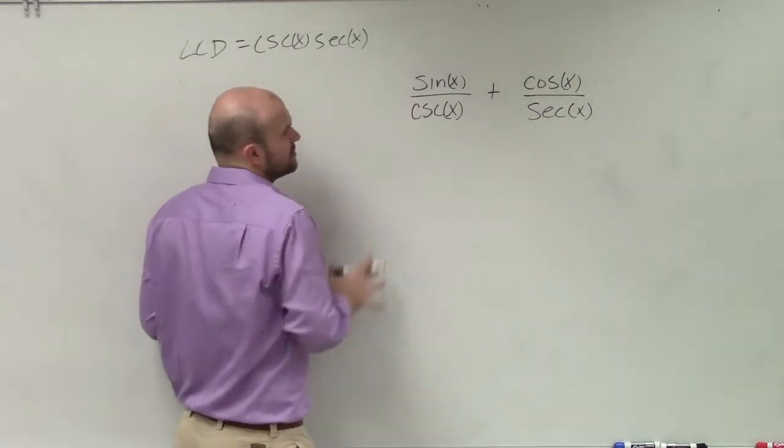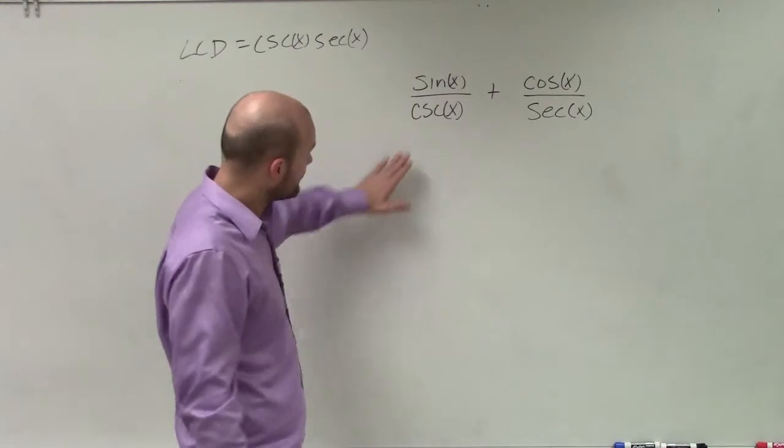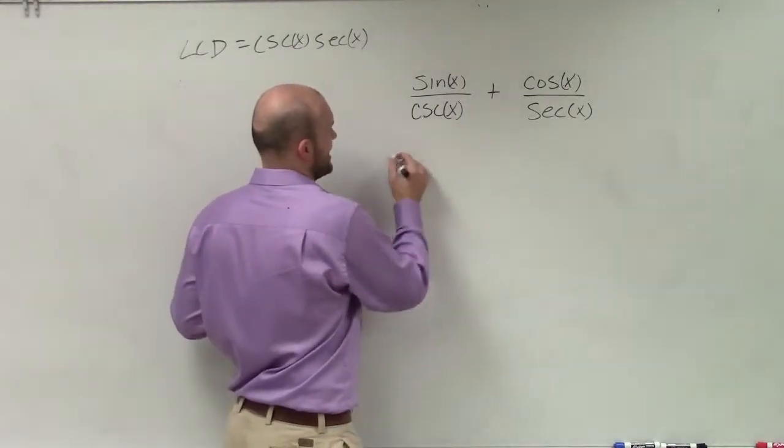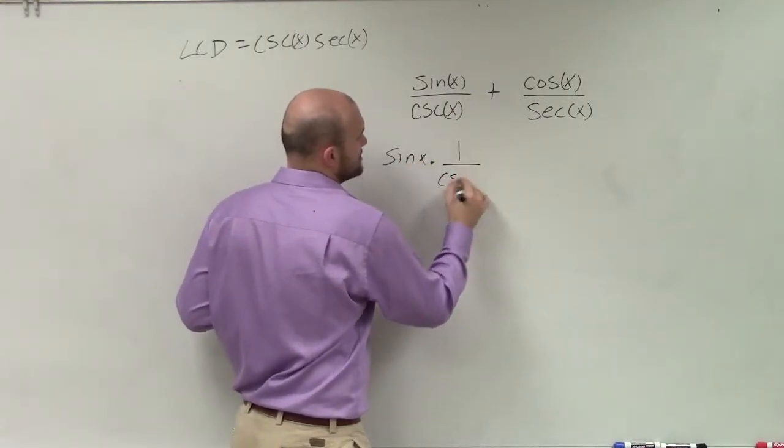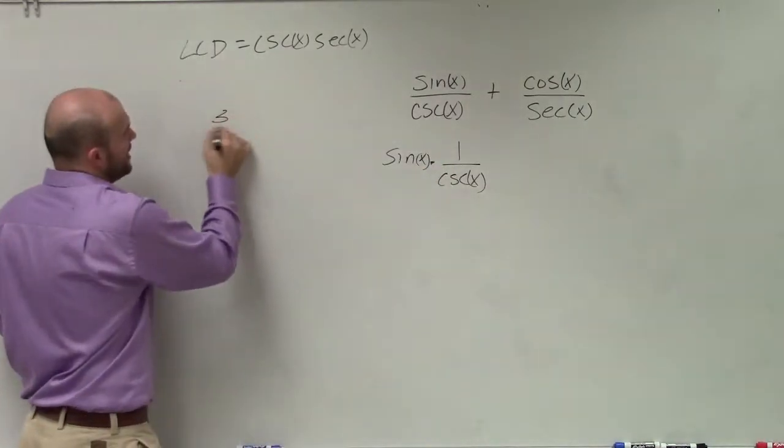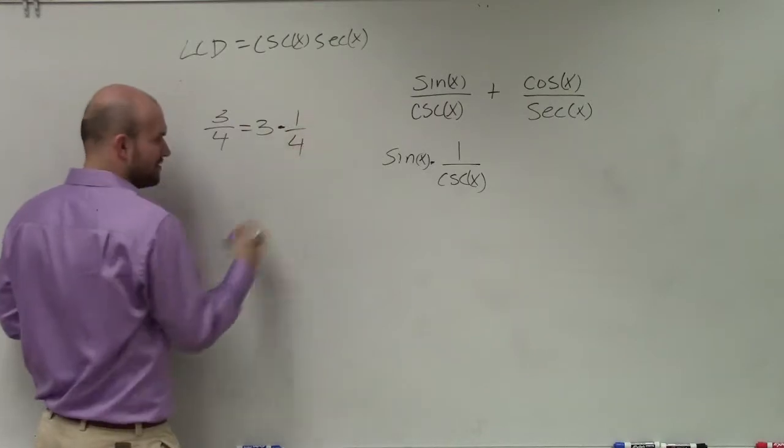But I also wanted to let you know that there's another way we can rewrite this. To rewrite this, I can write it as sine of x times 1 over cosecant of x. I was telling my students today, they're having trouble with this. I can rewrite 3 fourths—that's the same thing as 3 times 1 fourth, right?